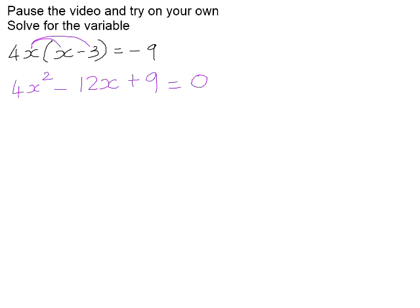We now need to factorize this. This is actually a perfect square trinomial, so it will factorize into a perfect square binomial. The square root of 4x squared is 2x, the square root of 9 is 3, it needs to be negative in the middle in order to give us negative 12x.